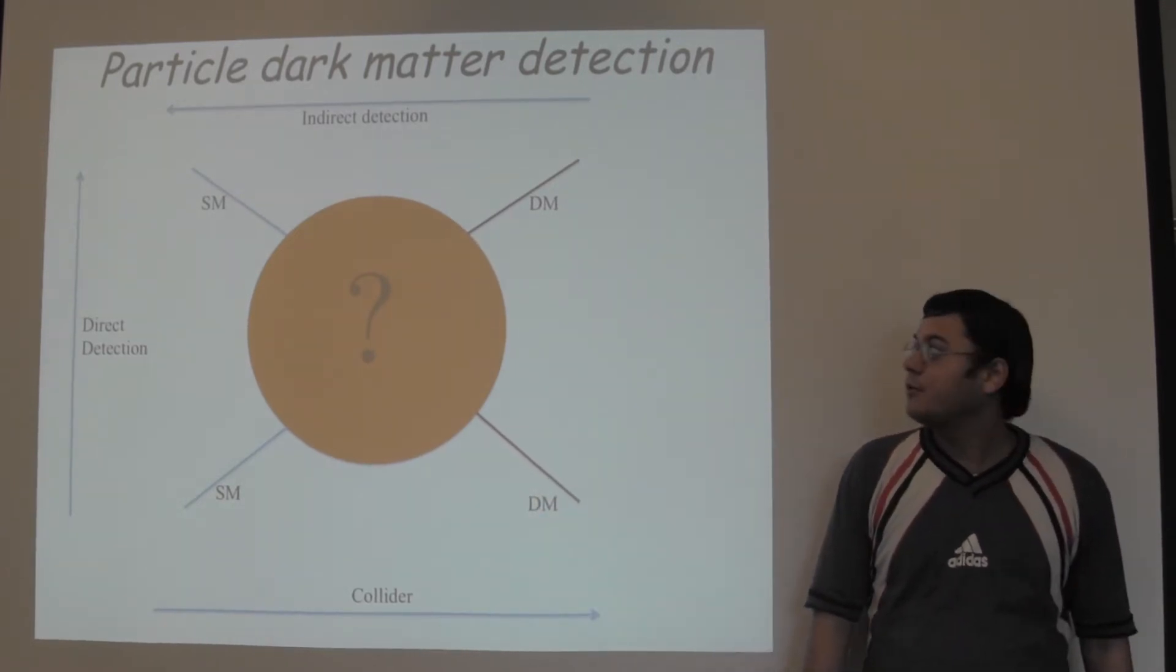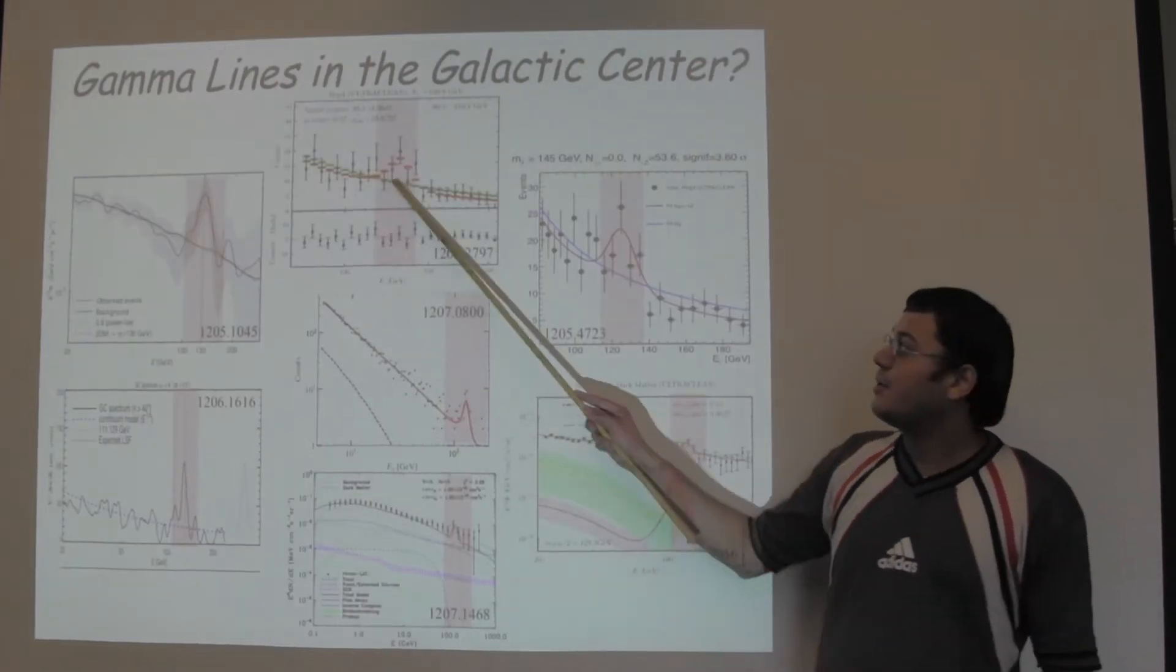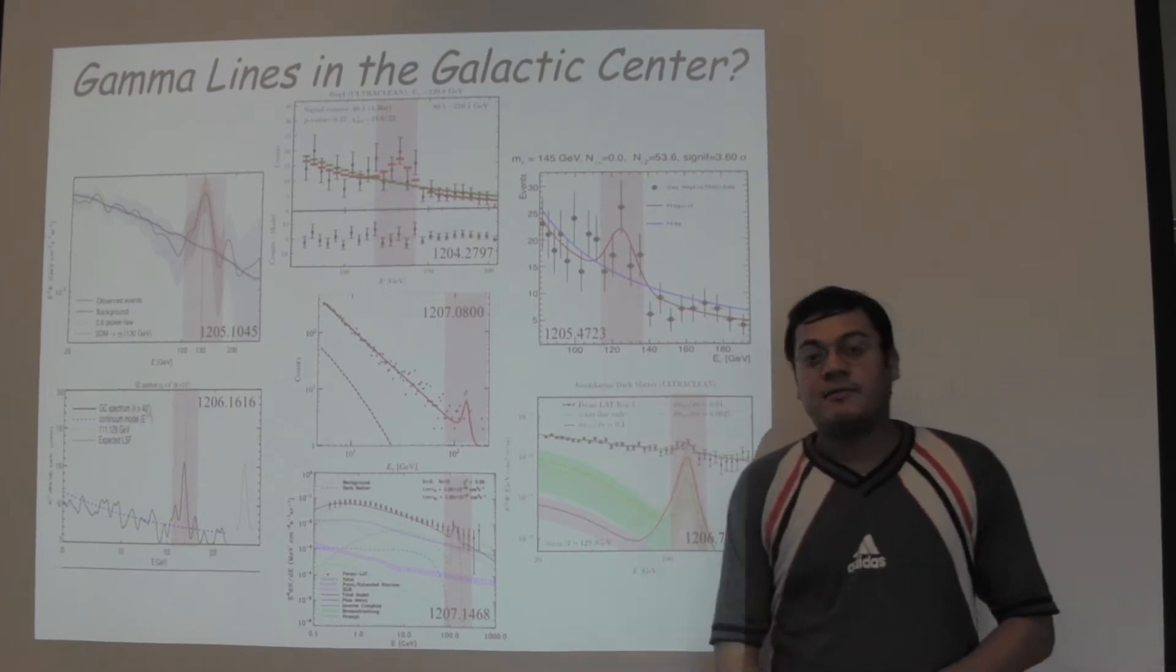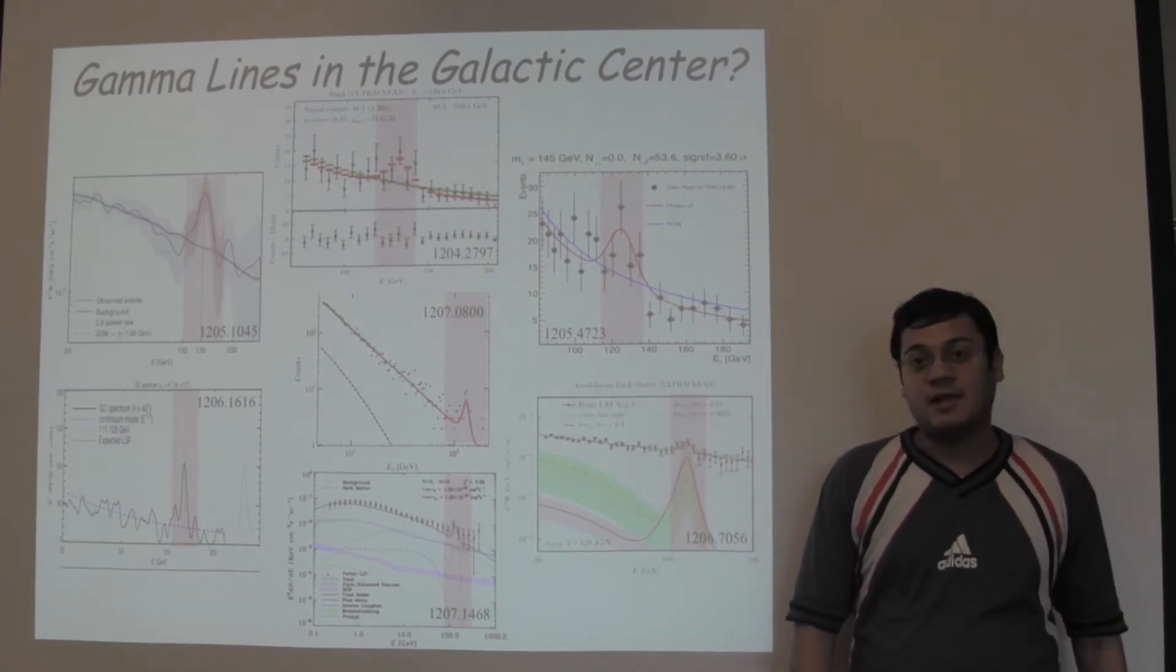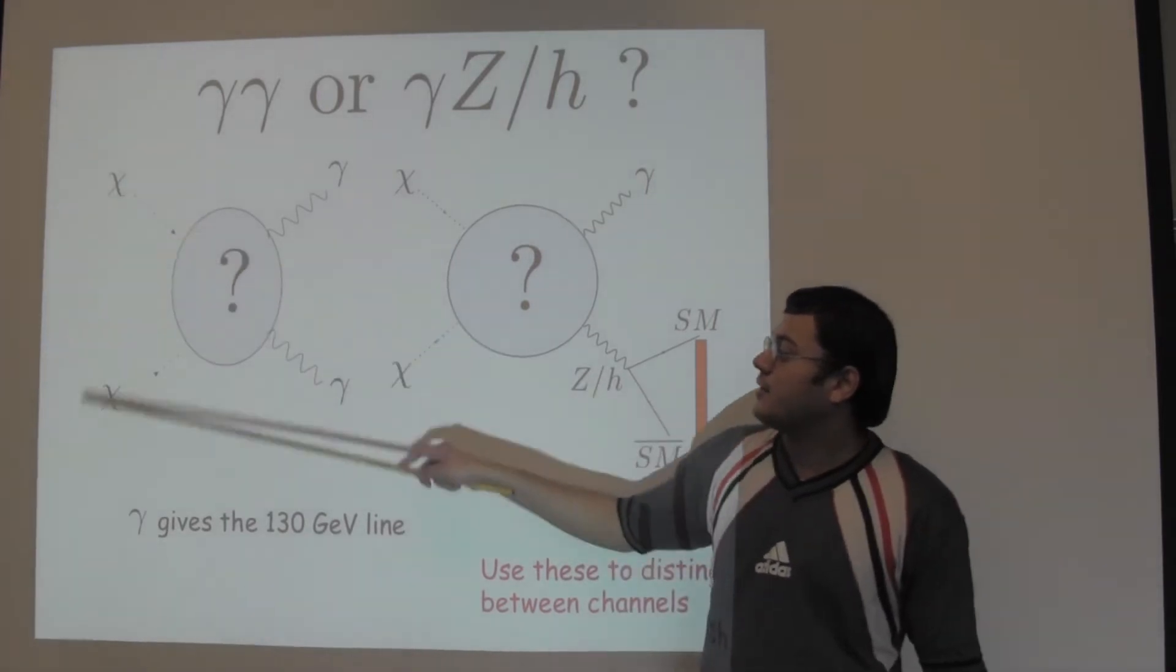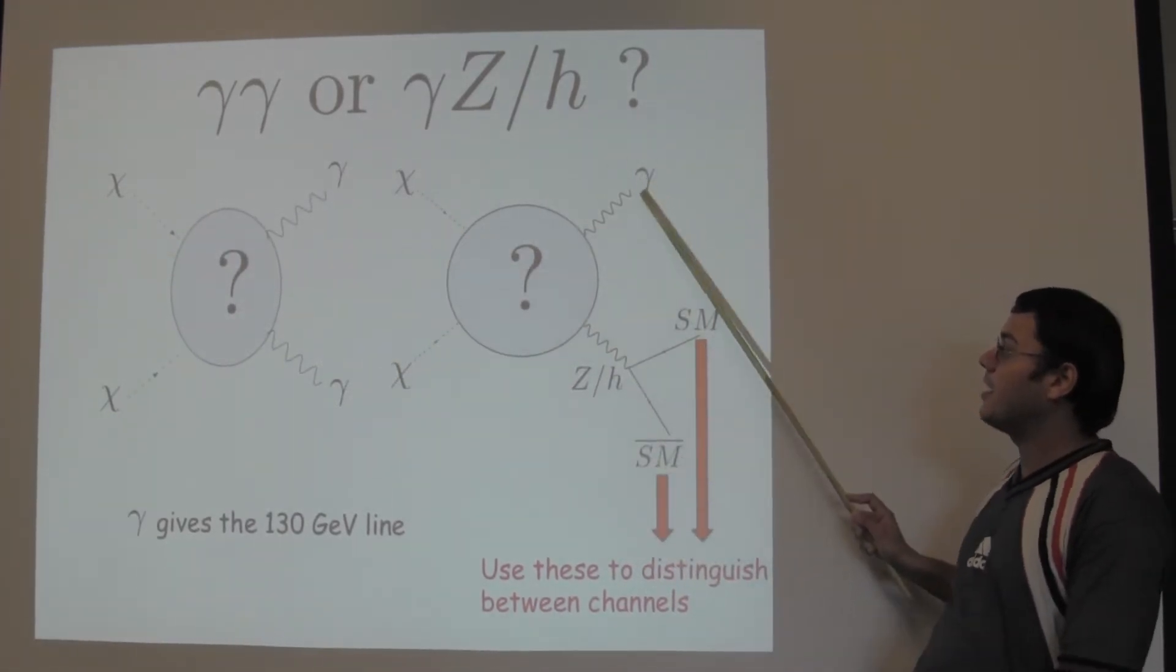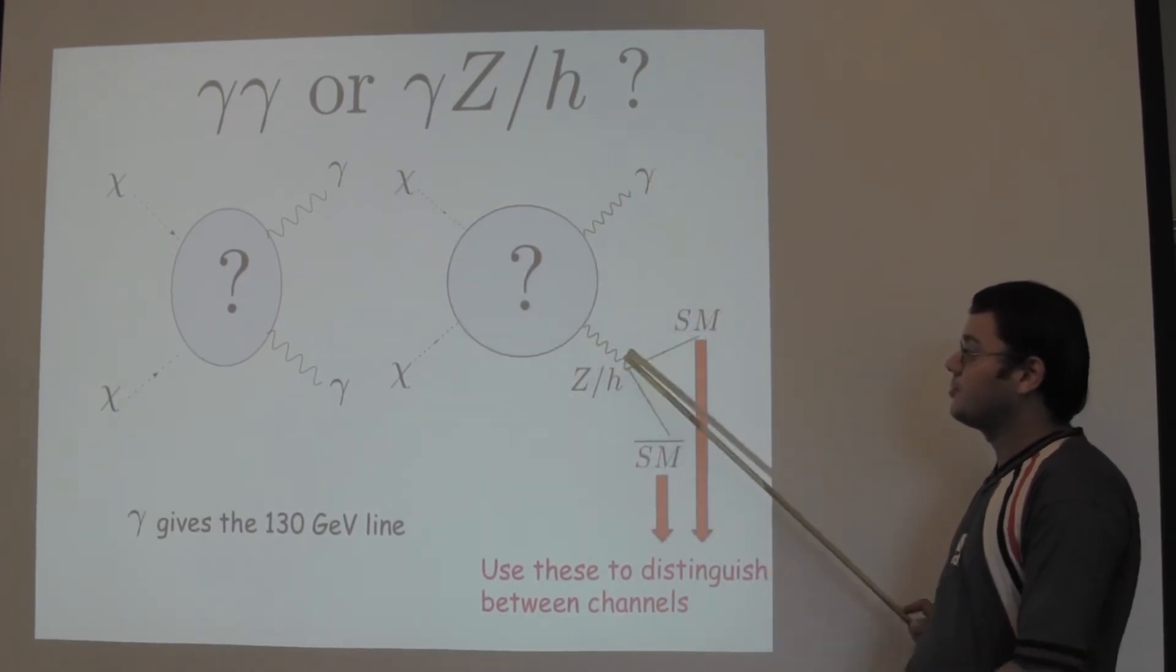Recently, there has been a lot of excitement about the presence of a 130 GeV gamma ray line at the galactic center found in the Fermi LAT data by various groups. If one assumes that this gamma ray line arises from dark matter annihilation, then there are only three two-body standard model final states: dark matter annihilating to gamma gamma, dark matter annihilating to a gamma and a Z boson, and dark matter annihilating to a gamma and a Higgs boson.